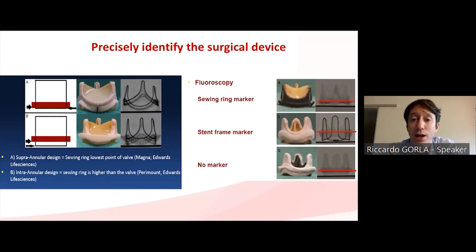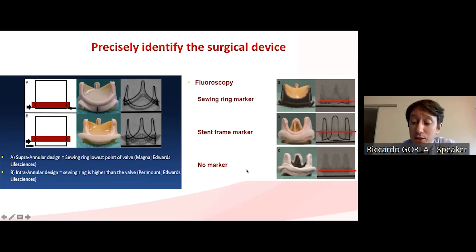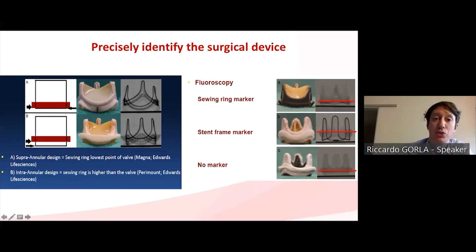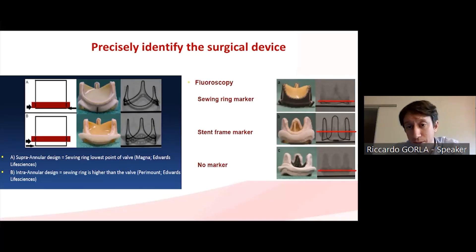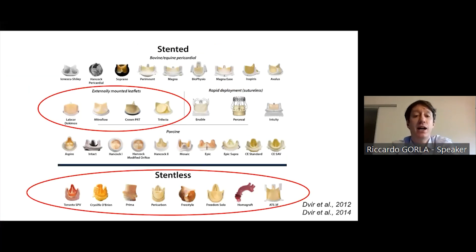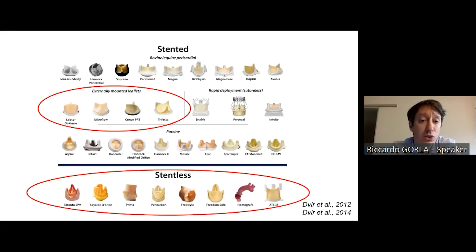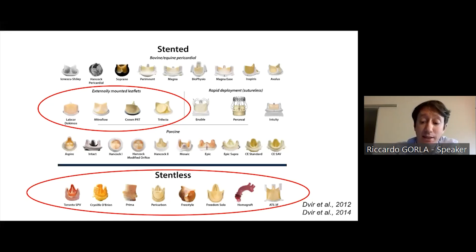Some valves have only the sewing ring visible, others show stent frames, and some have no marker at all. You need to know the lowest part of the prosthesis during implantation to target your implantation depth. Studies have demonstrated that stented valves with externally mounted leaflets and stentless valves carry the highest risk of coronary obstruction.